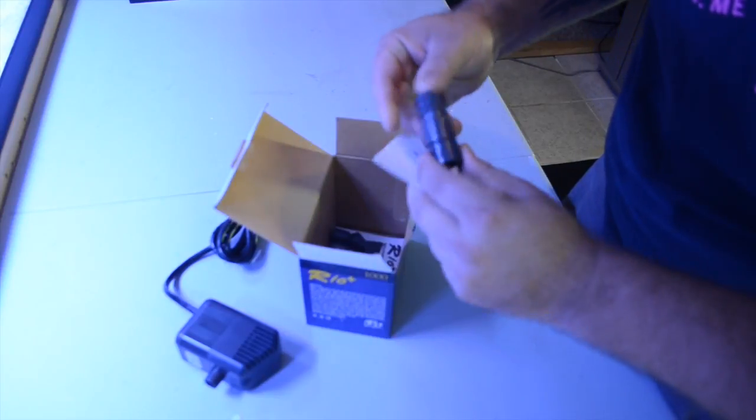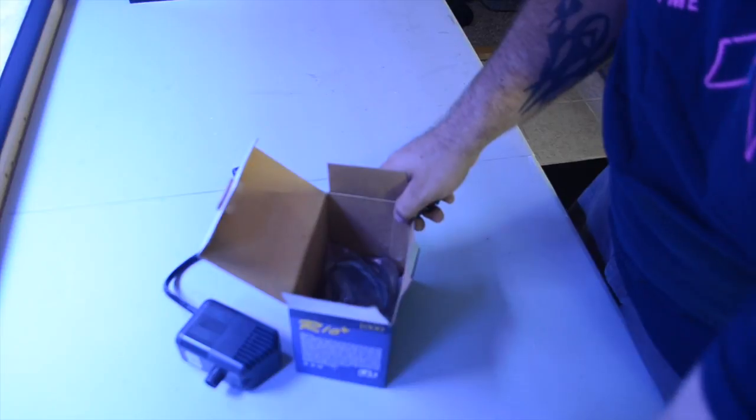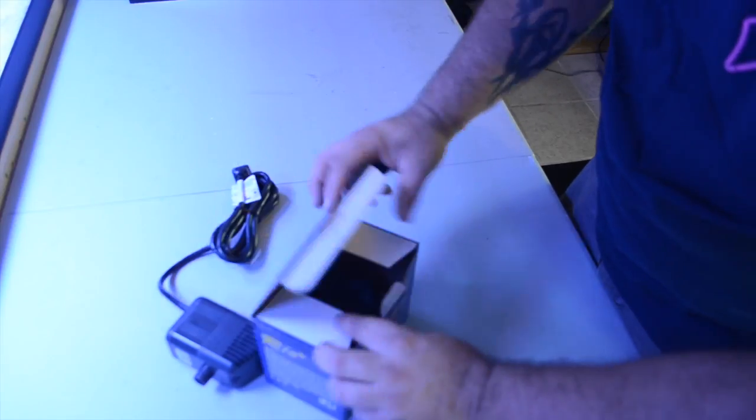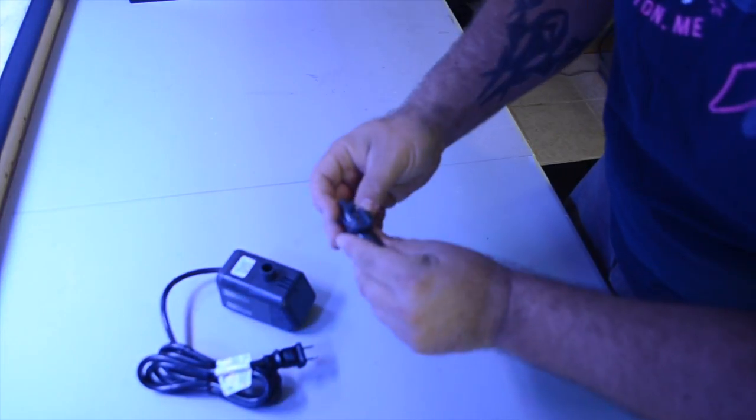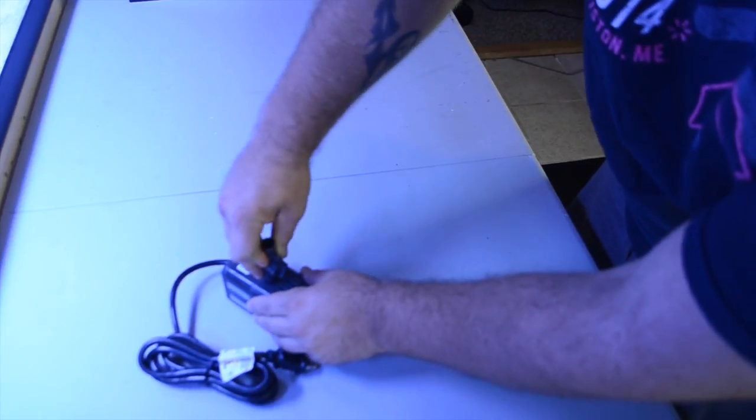I definitely recommend that you hang on to all the contents of this package just for future instances because you never know what's going to happen. After you find the ball valve, all you have to do is put it on the outfeed of the pump.